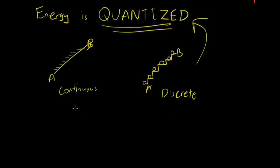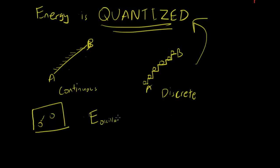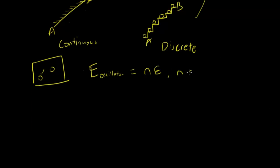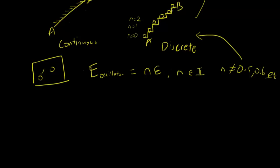Energy is quantized, and Max Planck said that each oscillator — remember the oscillator in the metal that vibrates at a certain frequency — the energy of each oscillator is an integer number of some value epsilon. Thus, where n is a member of the integers, the energy of any oscillator can occur at only certain discrete values where n equals 0, 1, 2, but nowhere in between. n cannot equal 0.5, 0.6, etc.